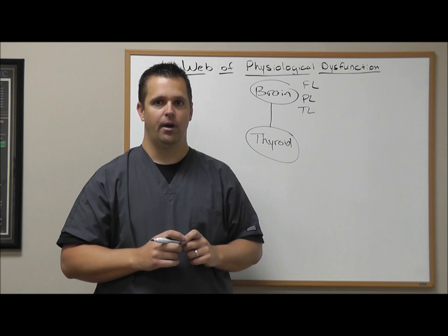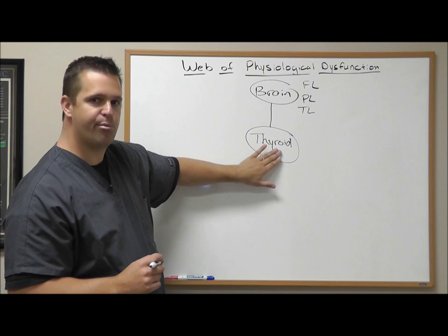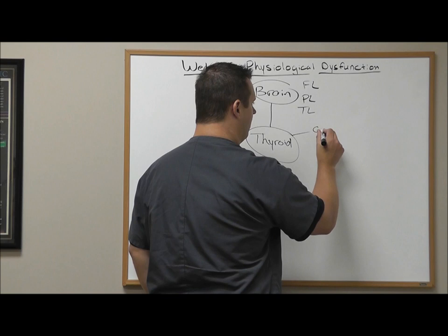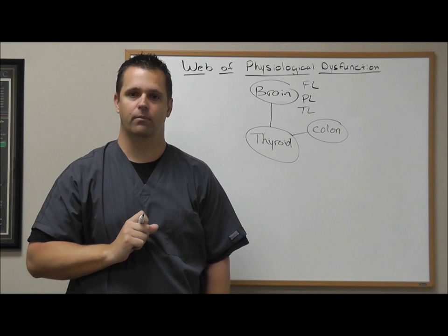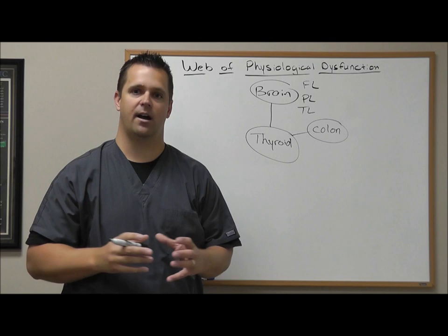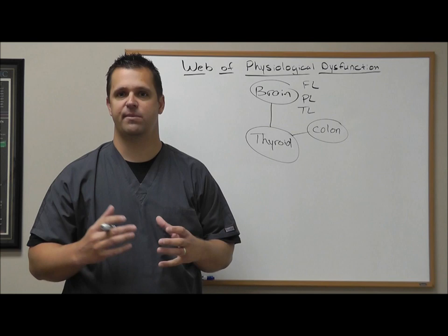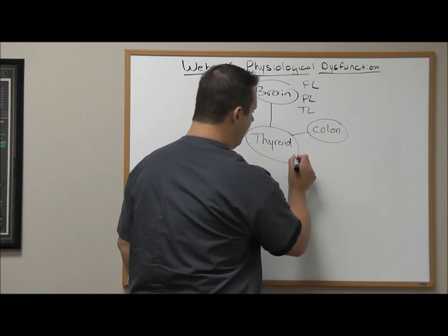So if you have any of those symptoms in any of those three parts of your brain, you not only have a thyroid problem, but you have a brain problem. The next part of this web is our colon. How do you know you have a colon problem? Well, you get symptoms of diarrhea, possibly constant constipation, you have to take laxatives frequently to move your bowels, or you have IBS symptoms — meaning you alternate pretty frequently between diarrhea and constipation.